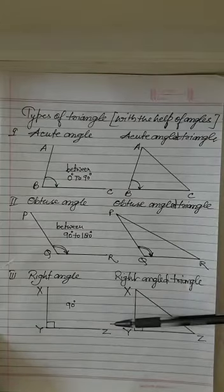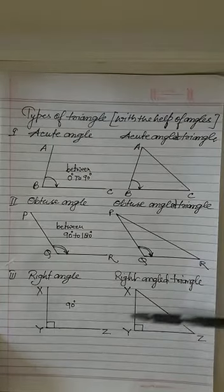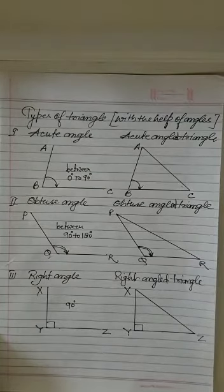Come to this one. X, Y, Z. I took 90 degree right angle. When I will join X, Z. It will become right angled triangle.